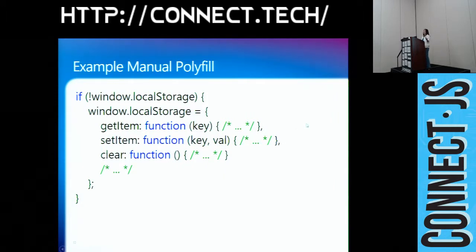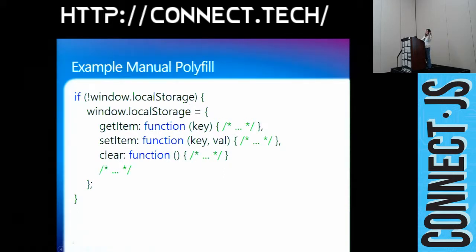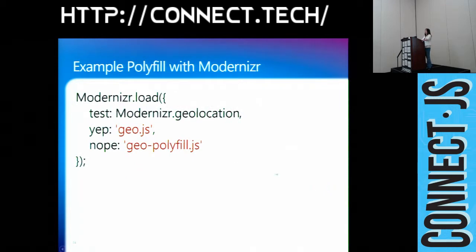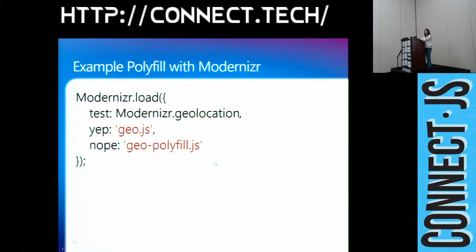You can do a manual polyfill — for example, for the localStorage feature in HTML5. If the browser doesn't support localStorage, you provide a custom routine. Or for geolocation, you can use Modernizr.load: 'Modernizr.geolocation, yep: geo.js, nope: geolocation-polyfill.js.' If yes, run geo.js; if not, load one of the geolocation polyfills. This is a pretty straightforward way to support modern browsers versus legacy code.